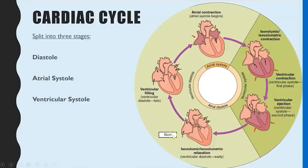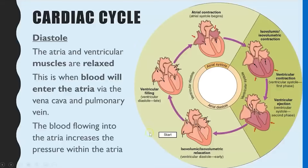Starting with diastole: on the diagram, the inner circle shows what's happening to the atria and the outer circle shows what's happening to the ventricles. Diastole means relaxing, so both the atria and ventricles are relaxing. Because the muscles are relaxing, we get a larger volume and blood flows into the atria during diastole. The pressure will start to rise as more and more liquid pours into that small space.